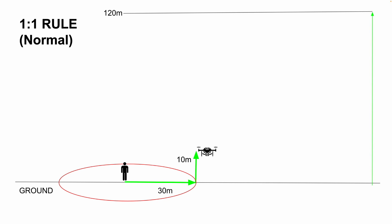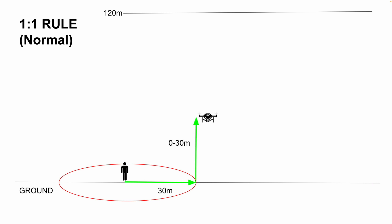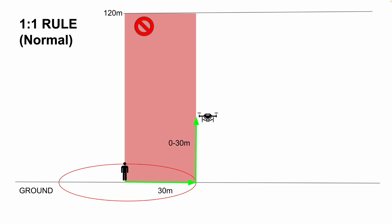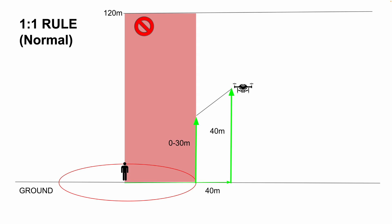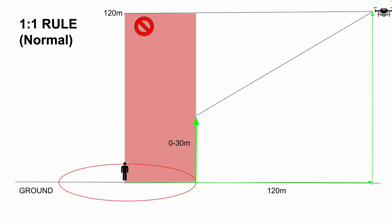Let's say the drone takes off and stays at 10 meters altitude — you still need to keep a minimum of 30 meters to the uninvolved person. If I increase the altitude to 30 meters, you still need to maintain a minimum of 30 meters, meaning that the airspace will be blocked in between up to the maximum height of 120 meters. So if I now increase the altitude to 40 meters, the 1-1 rule comes into play, because that automatically increases the minimum distance equal to the height — hence the name '1-1 rule.' That relationship continues up to the maximum height of 120 meters.